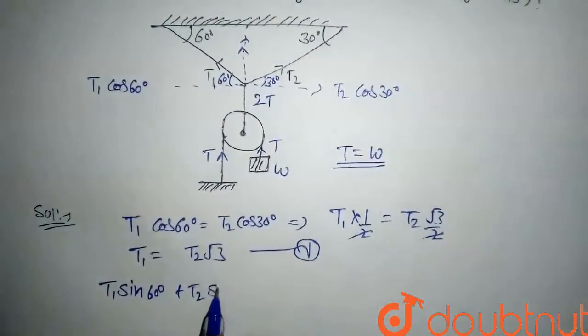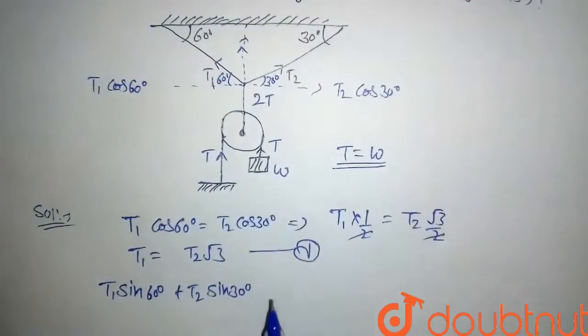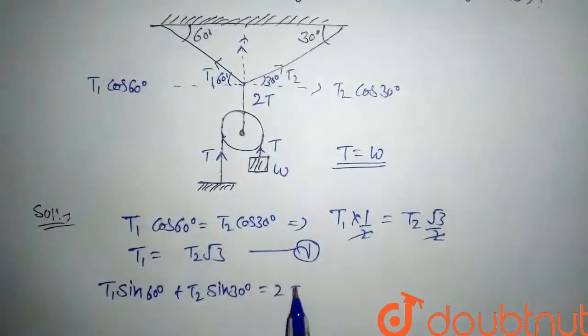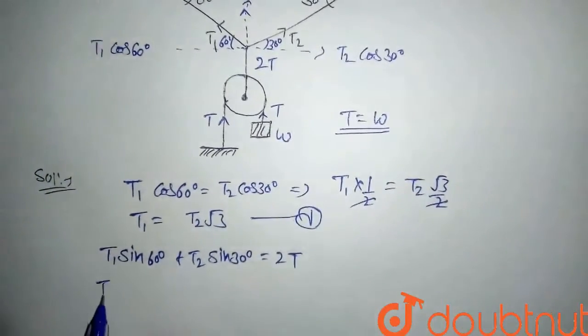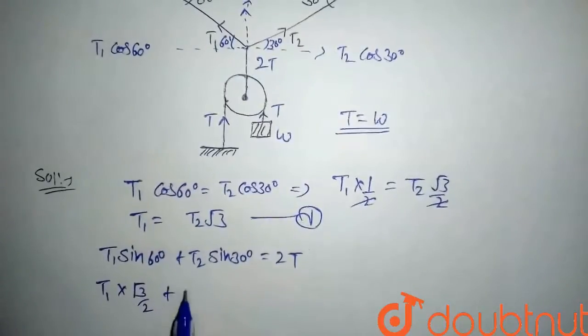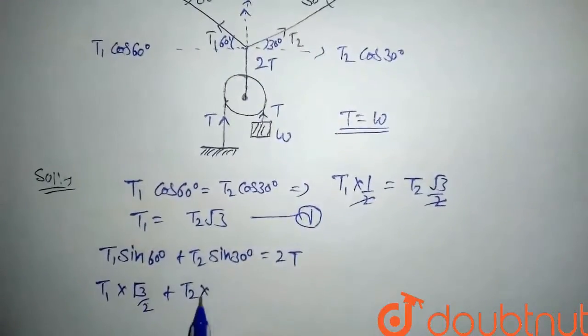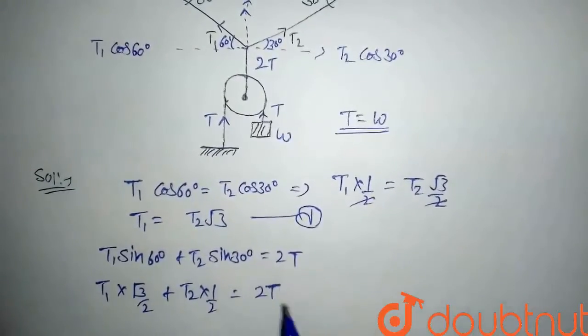plus T2 sin 30, and this will be equal to 2T. So here we will again put the values. So T1 sin 60 will be √3/2 plus T2 sin 30 will be 1/2, equal to 2T.